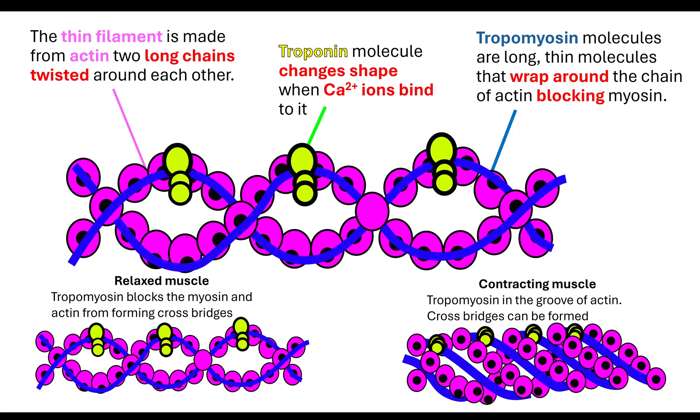When we talk about contracting muscles, what's going to happen is the tropomyosin is going to be moved into the groove of the actin. This therefore exposes the actin and the myosin so that they can now form cross bridges.